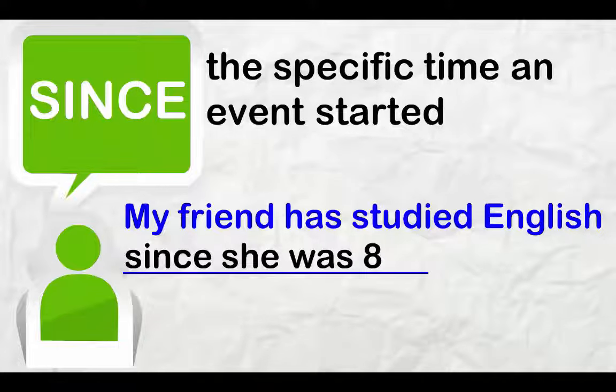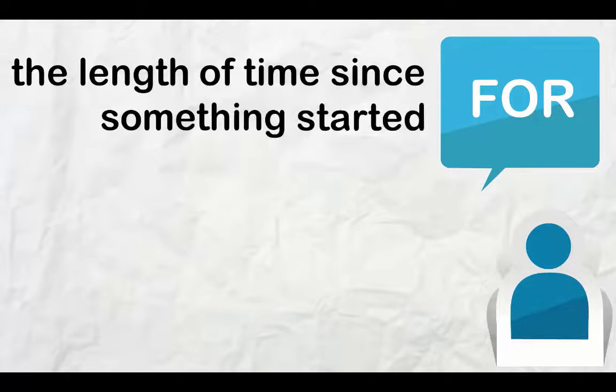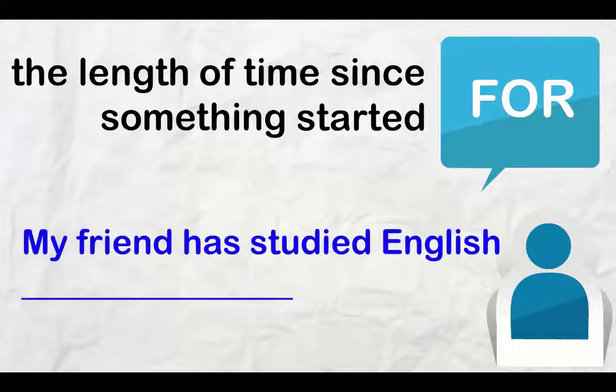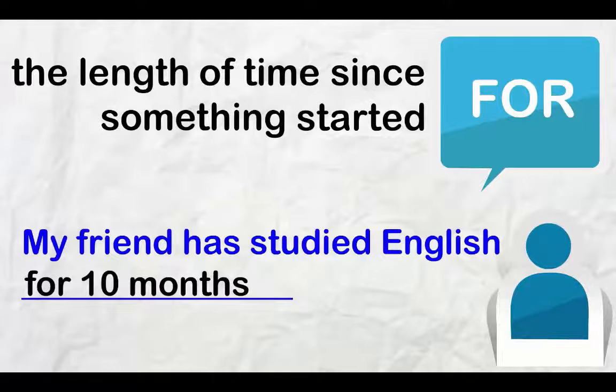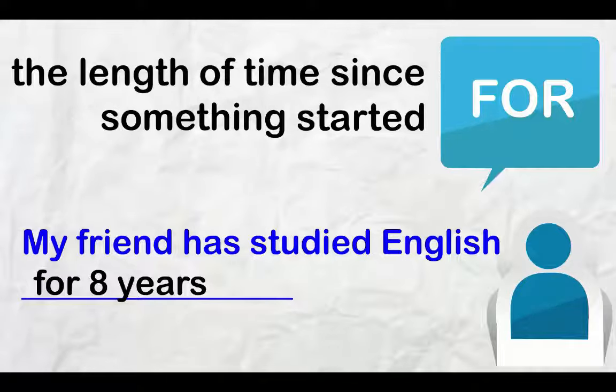When we use for, we use it to describe the length of time since something started. For example, my friend has studied English for a day, for two weeks, for ten months, for eight years.